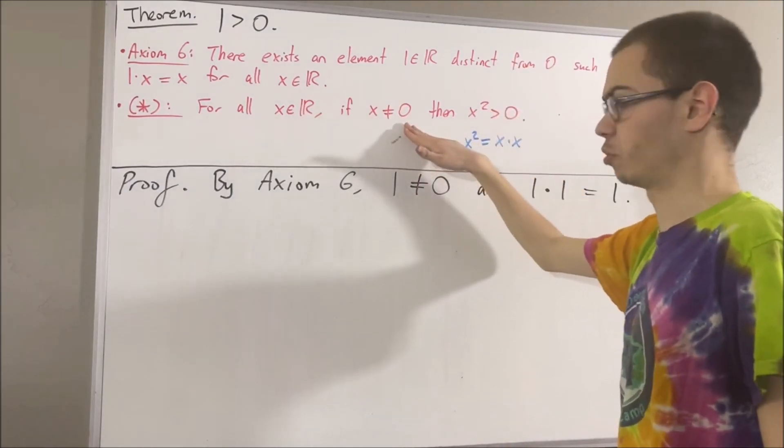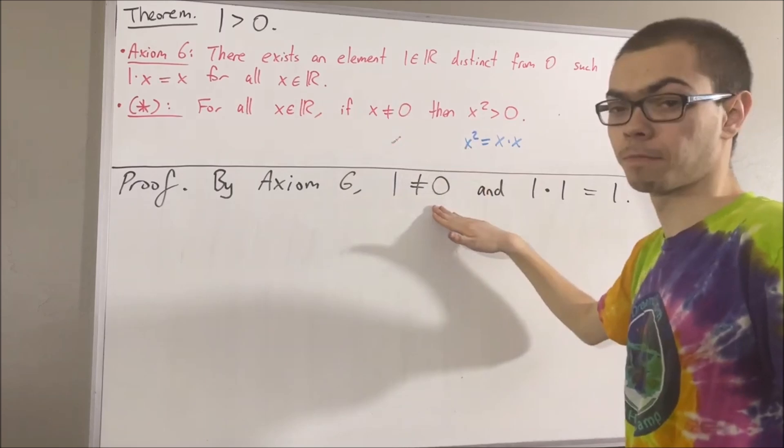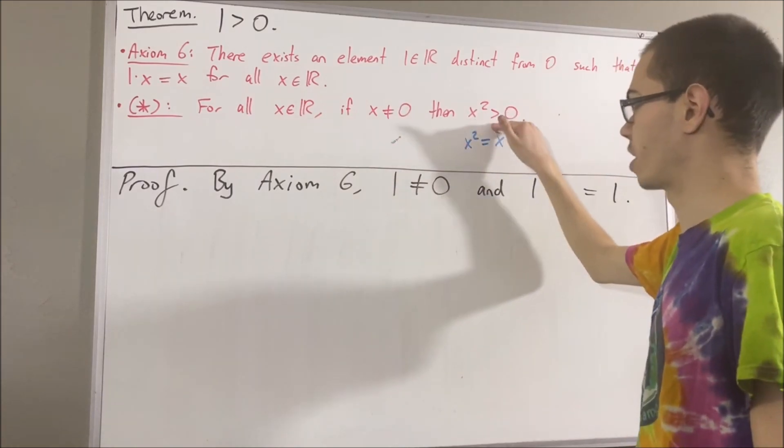Well, we know that 1 is not equal to 0. That's what we have here. So we can conclude that 1 squared is greater than 0.